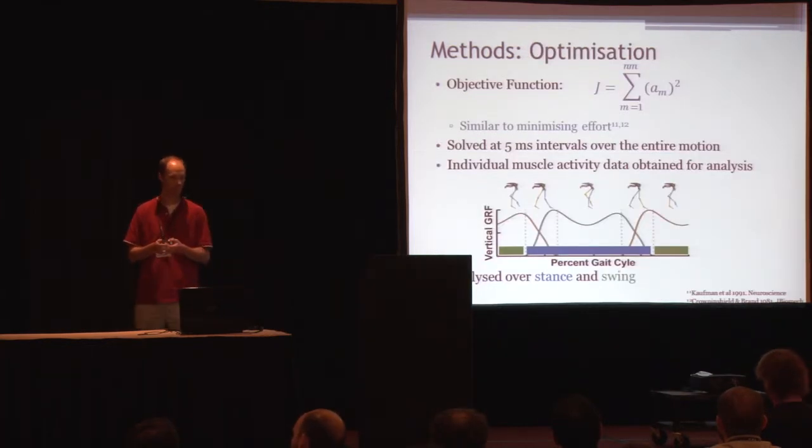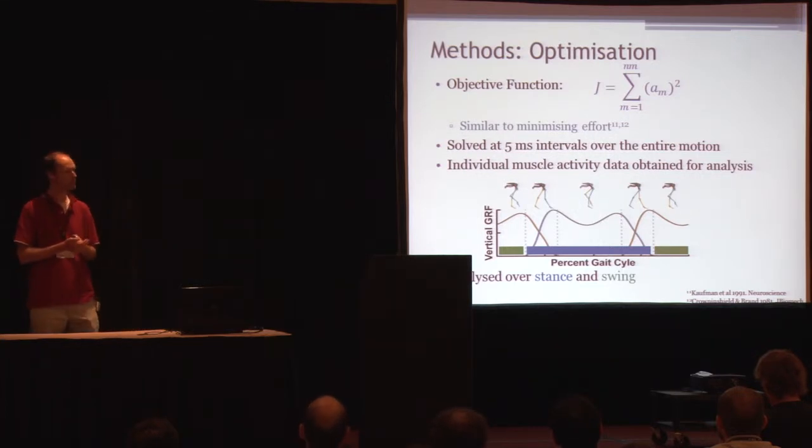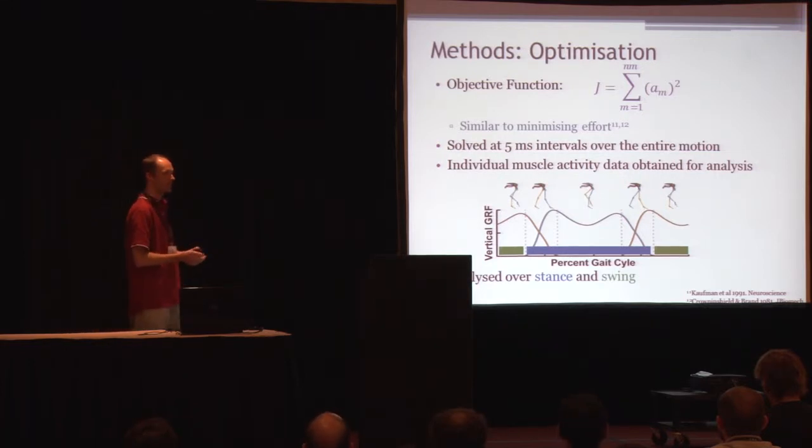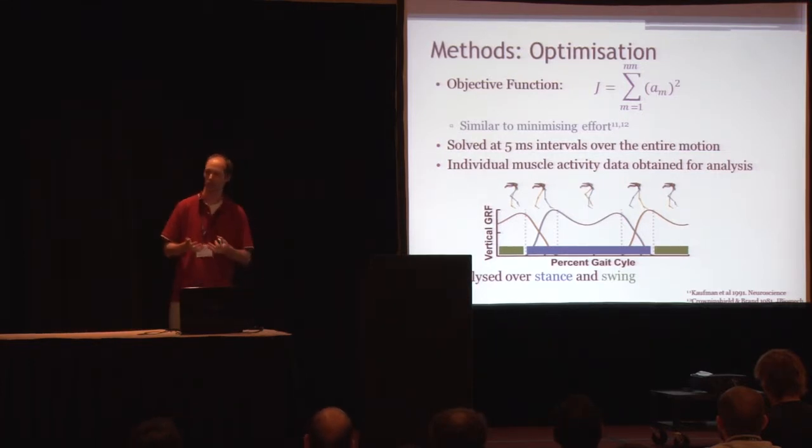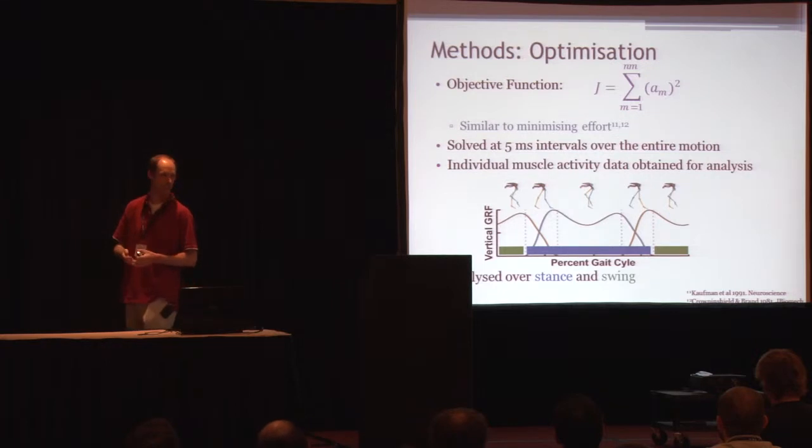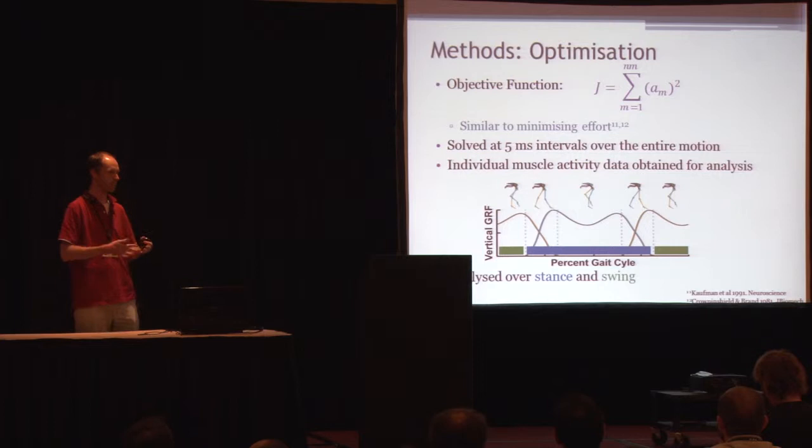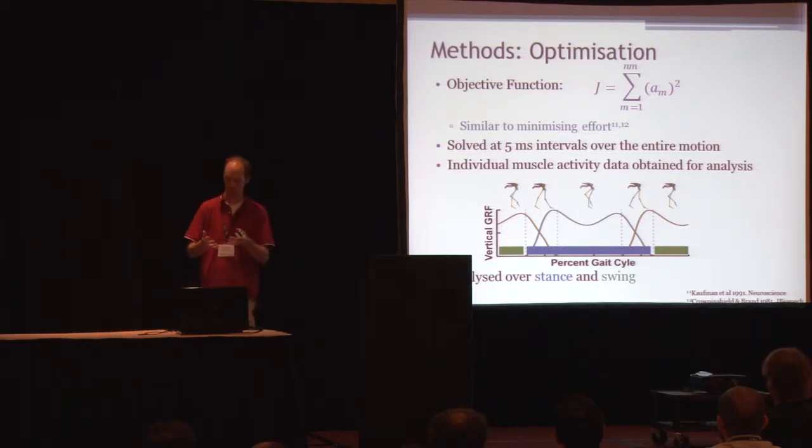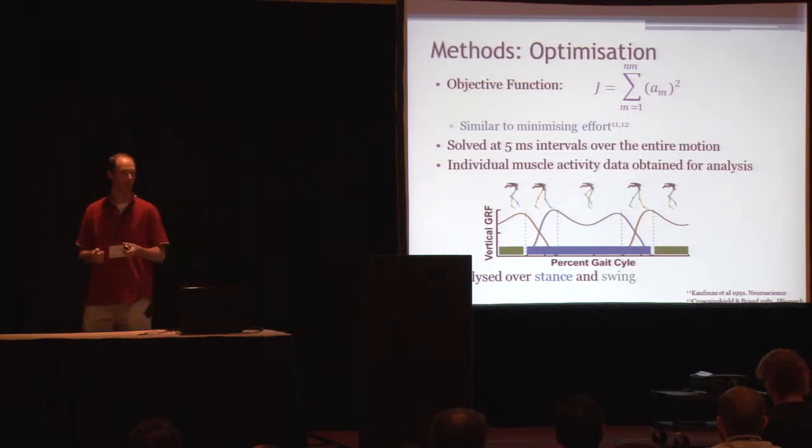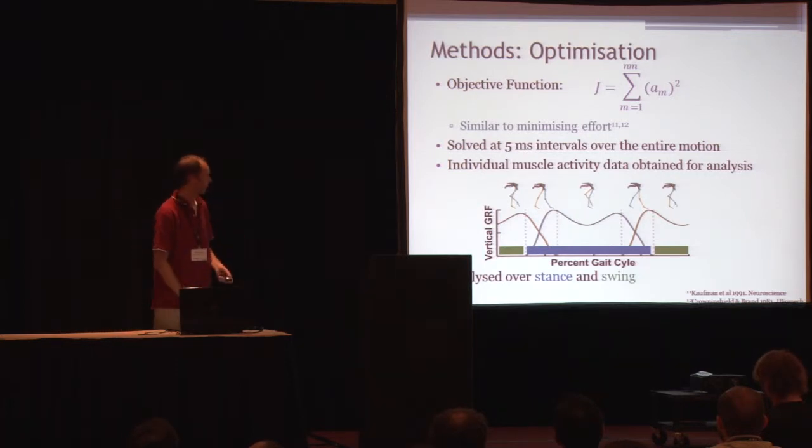As far as the objective function goes, what we decided to use was to minimize activation squared of the muscles. This is similar to minimizing effort. The ostriches are really efficient in both walking and running, and we have an idea that maybe they minimize effort as well as maximizing speed. So we have the joint torques, which are maximizing speed, and then we also minimize effort to try and parse out those muscles.